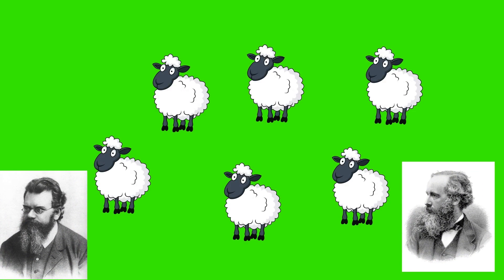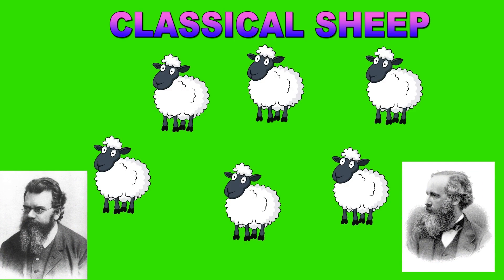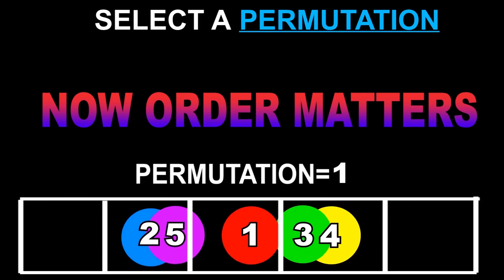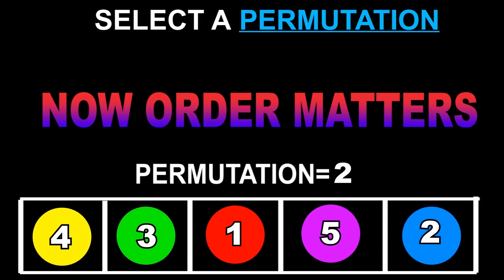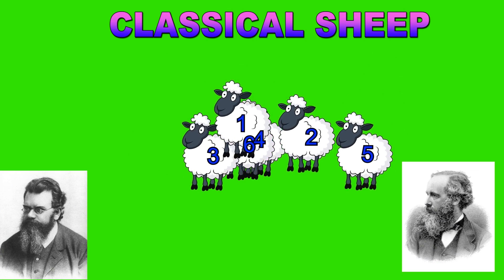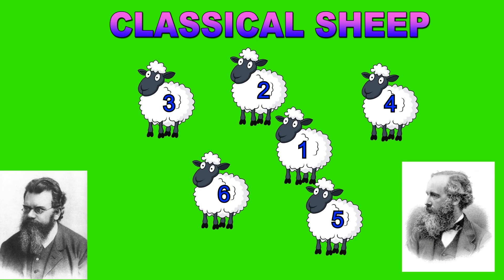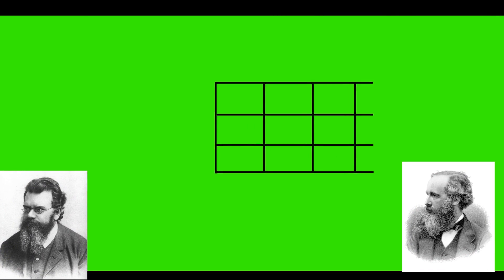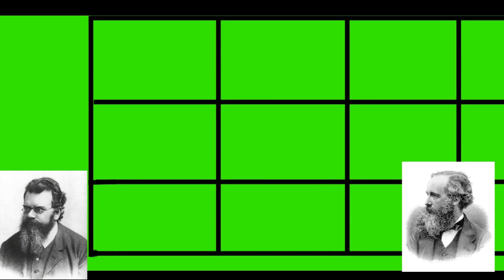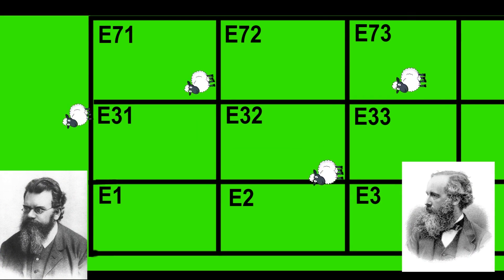Now, the first sheep is the Maxwell-Boltzmann sheep or the classical sheep. First thing — these sheep are numbered, that means they are distinguishable. And as you have learned in the permutation and combination video, when something is distinguishable, they lead to more arrangements. So with this you can tell which sheep is which one, and this is what makes it classical statistics. Now imagine there is a grid of boxes on the ground. These boxes represent energy levels E1, E2, E3 and so on.